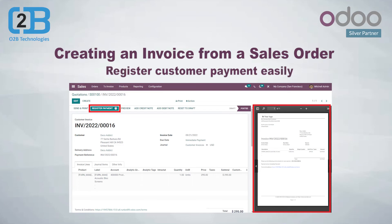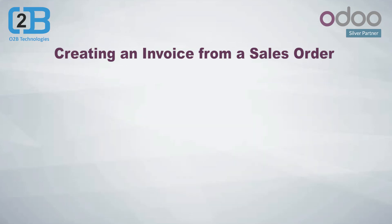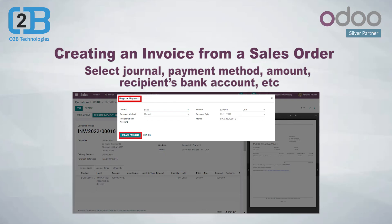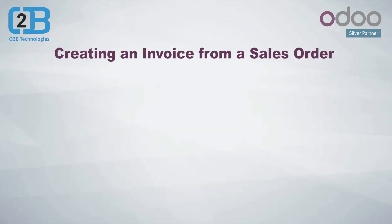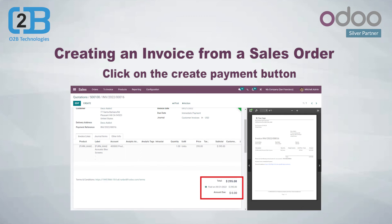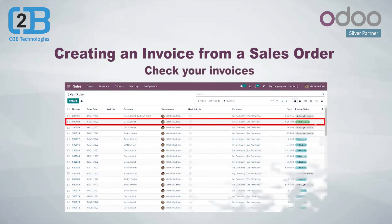Moving ahead, you need to click on the register payment button to register the payment received from your customer after sending them an invoice. Further, you need to select the journal, payment method, amount, payment date, memo, and recipient's bank account information. Click on the create payment button. It will get the payment registered in the system immediately. You can check your invoice status by clicking on the orders.